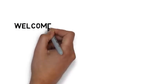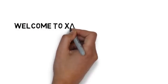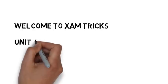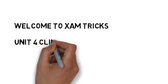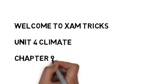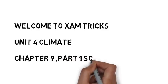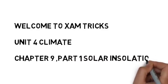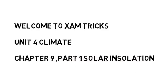Hello friends, welcome to Examtrex. This video is part of the series covering Unit 4 Climate and it deals with Chapter 9: Solar Radiation, Heat Balance and Temperature. This chapter will be divided into two videos. The first part will cover solar insolation and the factors responsible for the variation in solar insolation received by the earth and the atmosphere.